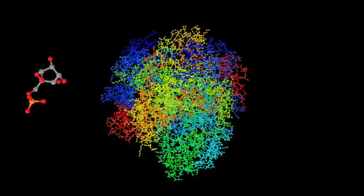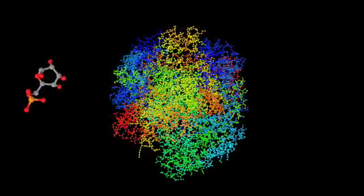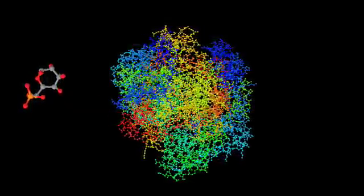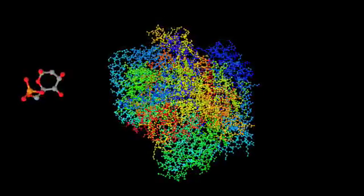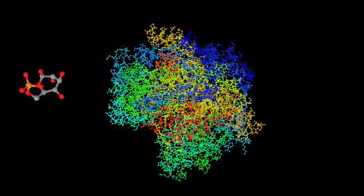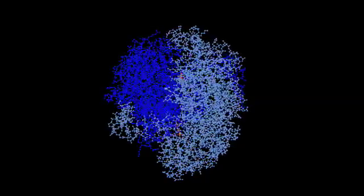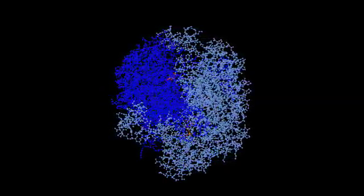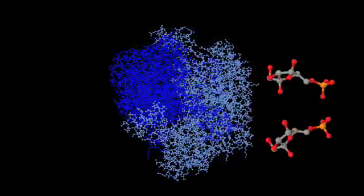This enzyme is phosphoglucose isomerase, and its job is to change the shape of the molecule we just made. It takes the glucose 6-phosphate and shuffles a few atoms and makes fructose 6-phosphate.